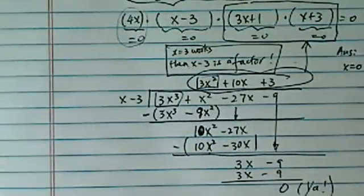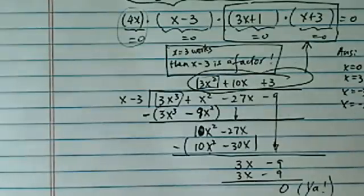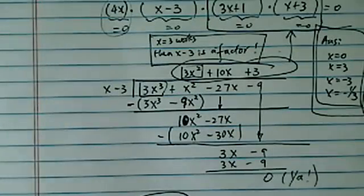x = 0, x = 3, x = -3, and x = -1/3. So here's our final 4 answers. Hope it's clear.